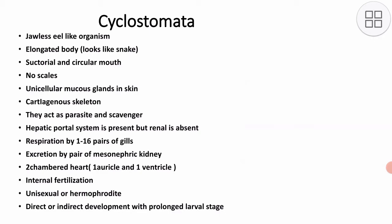The other class of Agnatha is Cyclostomata. They are jawless, eel-like organisms with an elongated body. The mouth is suctorial and circular. They do not have any scales and they consist of unicellular mucous glands in the skin.